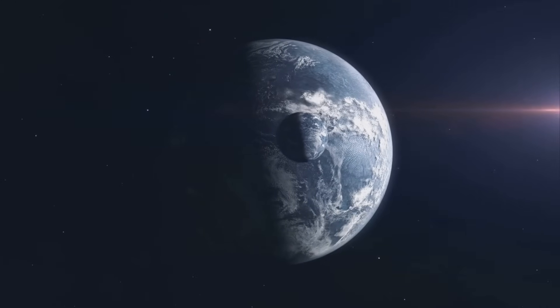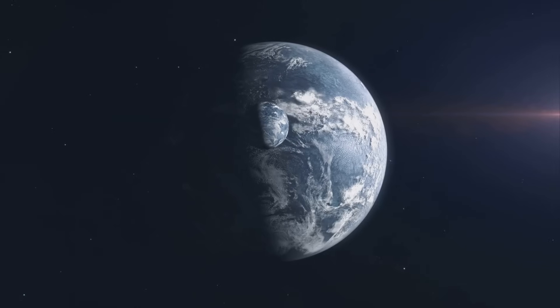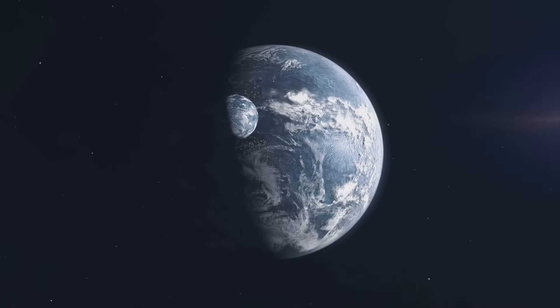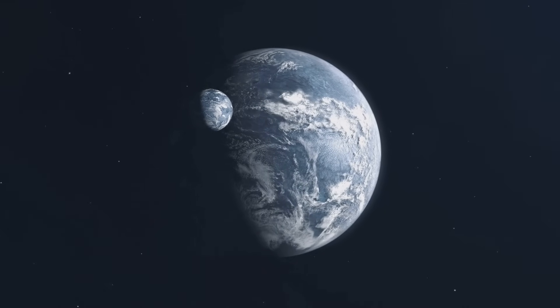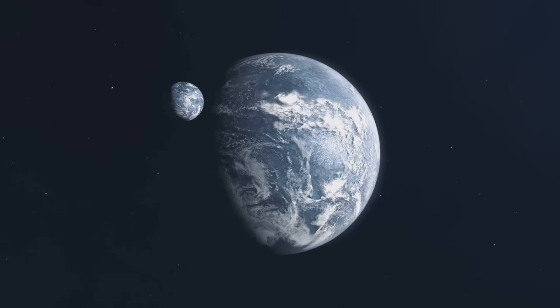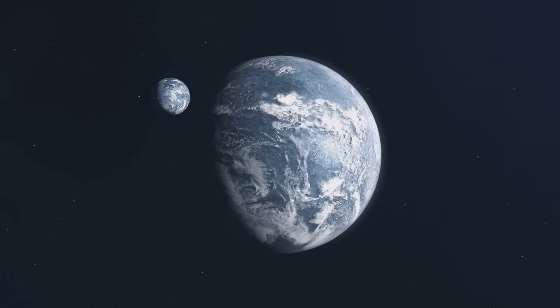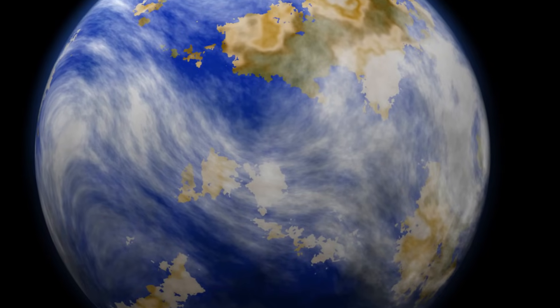This planet, situated in the habitable zone of its star, could potentially have liquid water on its surface, a key ingredient for life. Next on our list is Kepler 22b. This planet, located about 600 light-years away, is twice the size of Earth.